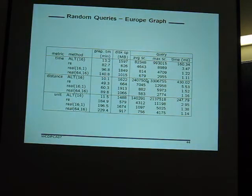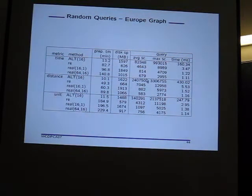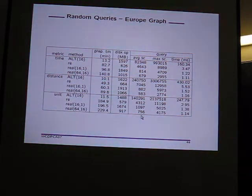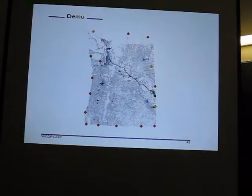The same results hold for the graph of Western Europe — on average you visit fewer than one thousand vertices and the running time is about one millisecond. Let me now run a demo.